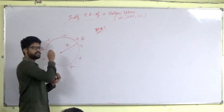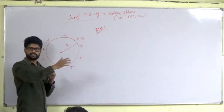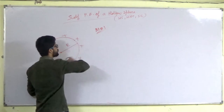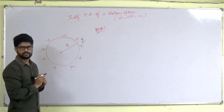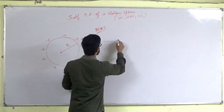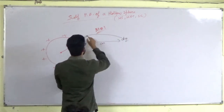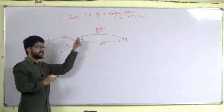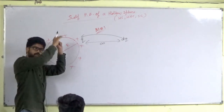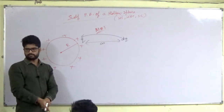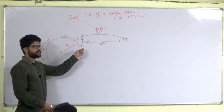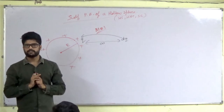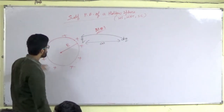We take dq charge from infinity, distribute it over the whole sphere, and repeat. At any time t, suppose small q charge is already on the sphere. Now we bring another dq charge from infinity — say 50 coulombs is already there — and we spread this new dq charge over the entire sphere. So small q is already distributed, and we bring dq from infinity.